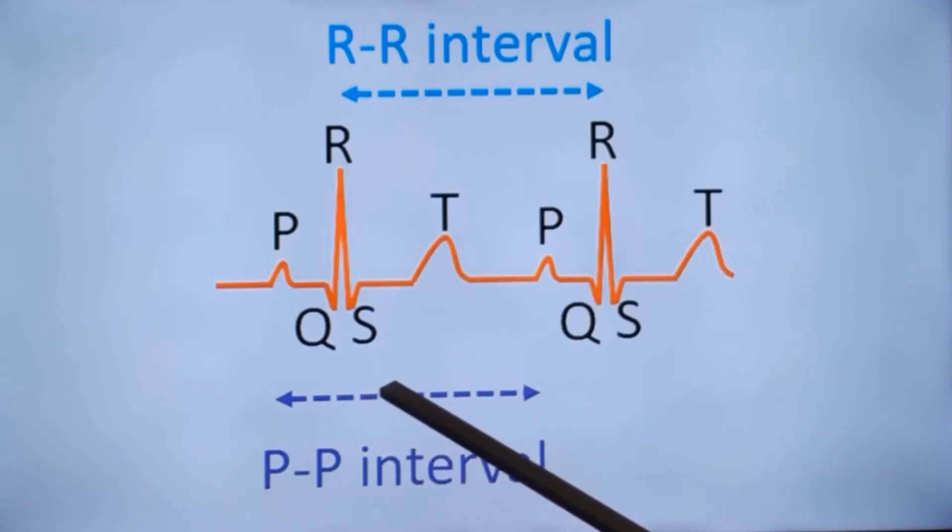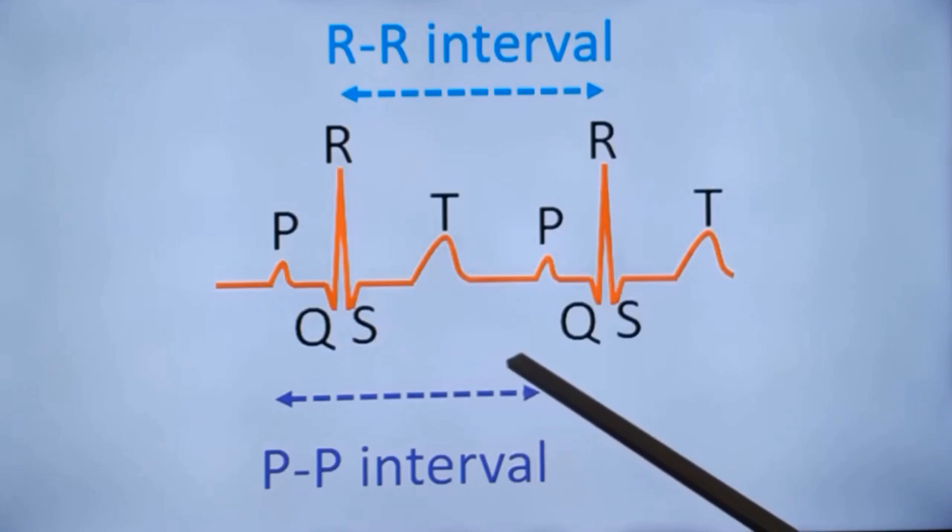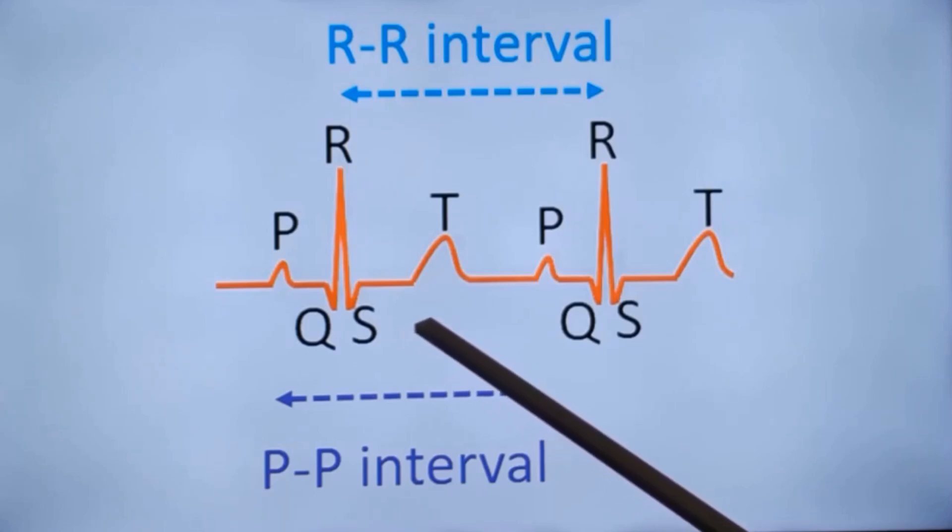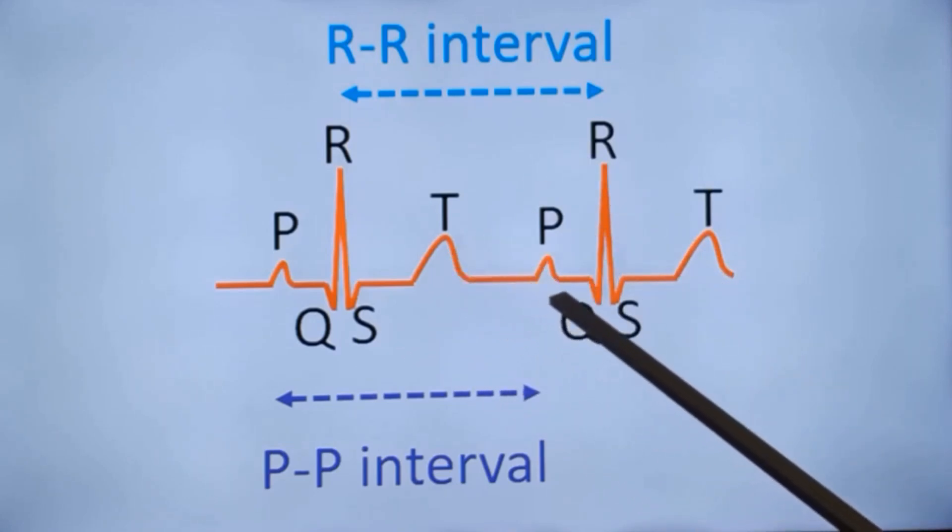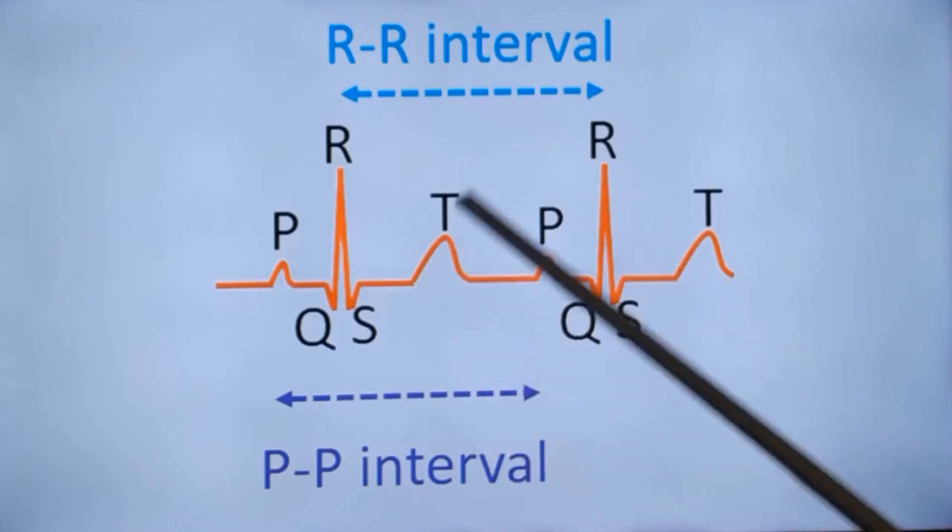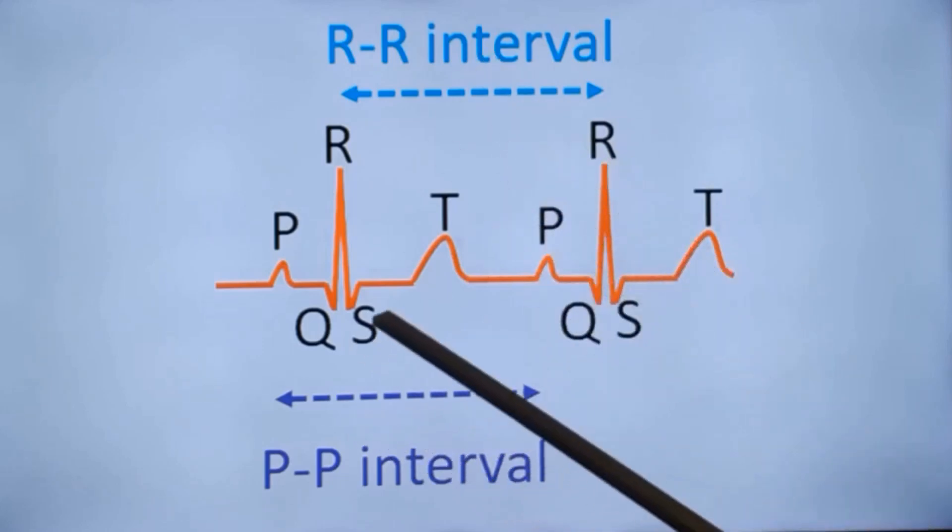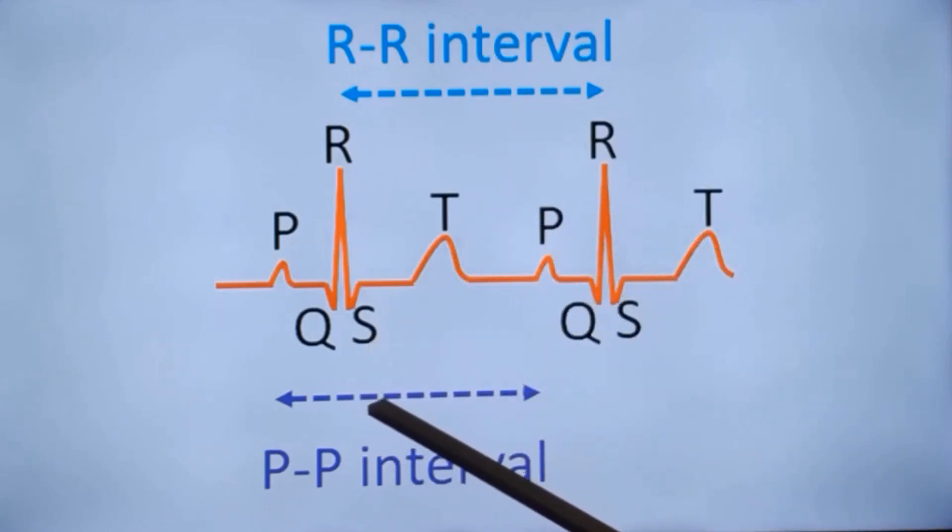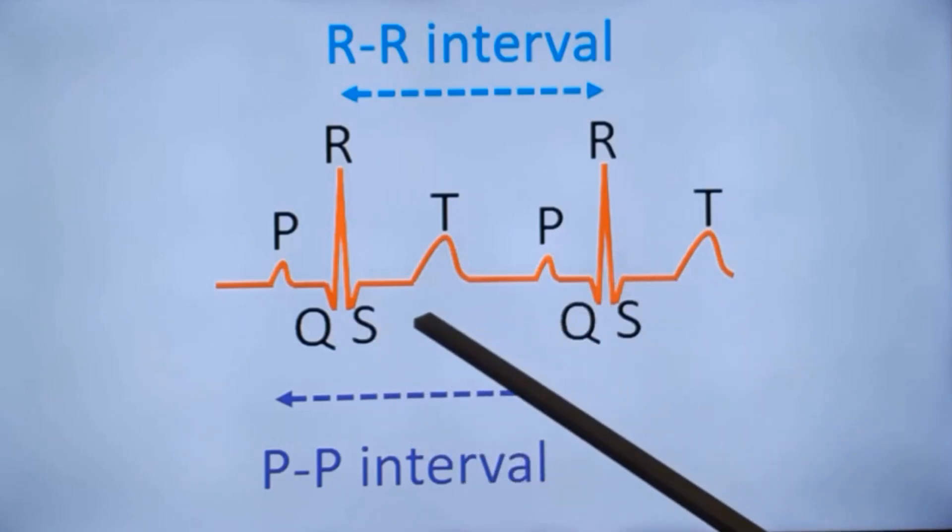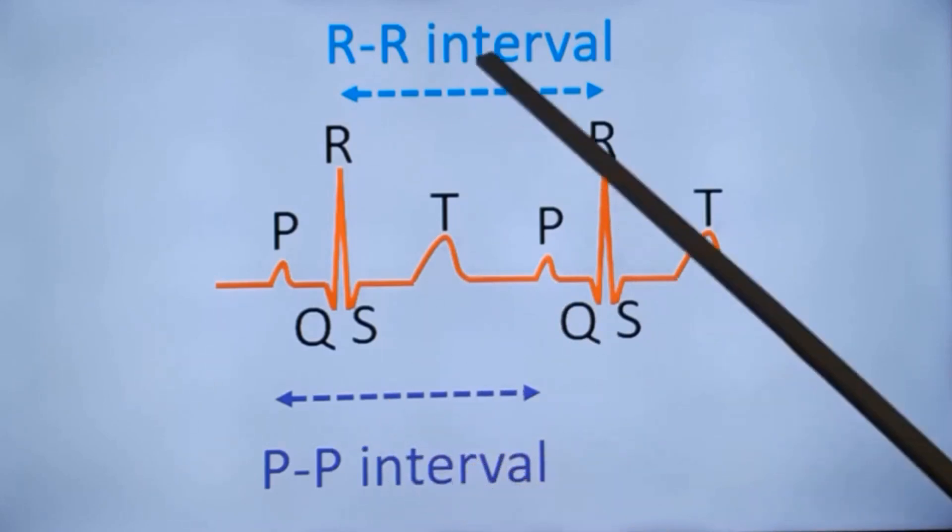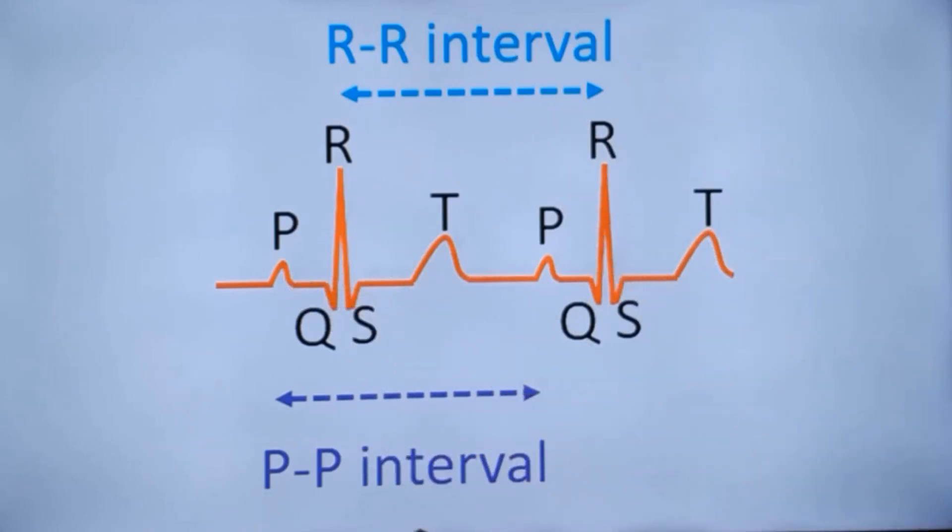But in conditions like complete heart block, it may be different. PP interval will be shorter and RR interval will be longer in complete heart block. Otherwise, in most cases, they are equal in normal sinus rhythm. And this will vary with the heart rate. When the heart rate increases, both PP interval and RR interval shorten. In general, all the intervals shorten with increase in heart rate, but the change in the intervals will be more for PP interval and RR interval compared to the other intervals.